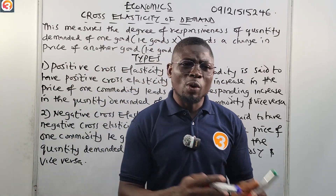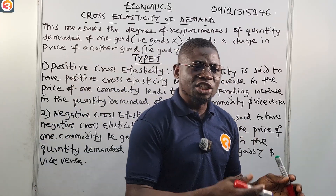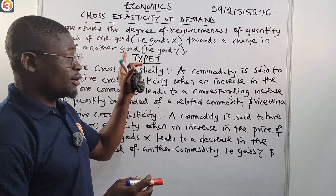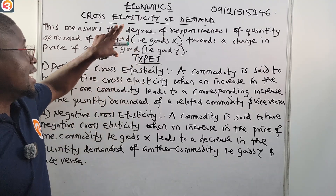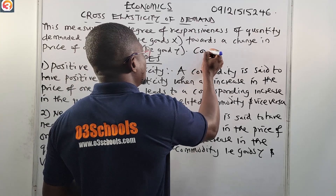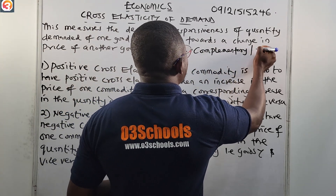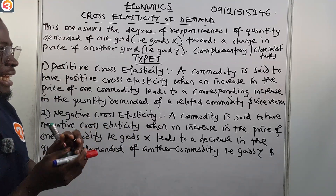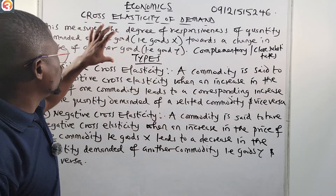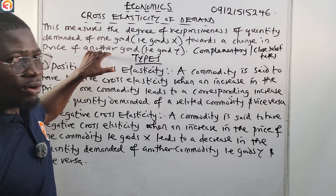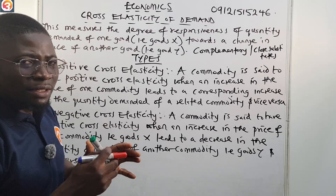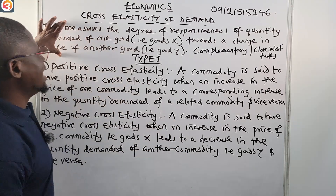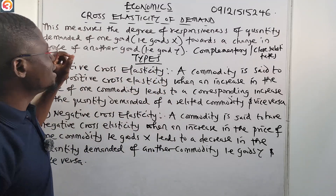That means if a particular good X changes price, what happens to Y? If good Y changes price, what happens to X? Examples of goods that experience cross elasticity of demand are complementary goods or goods that have close substitutes. The change in price of one affects the demand of the other — either increasing or decreasing it. So cross elasticity of demand measures the degree of responsiveness of quantity demanded of one good X towards a change in price of another good Y.